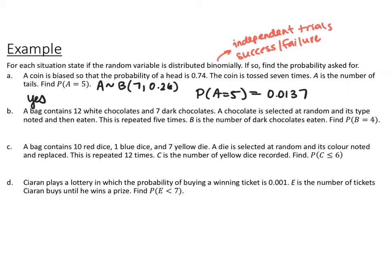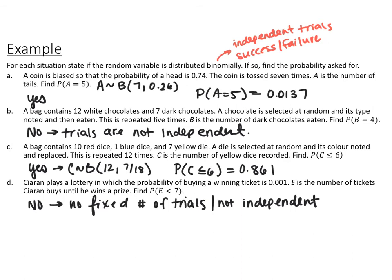For situation B: a bag contains 12 white chocolates and 7 dark chocolates. You select one at random, look at it, eat it, and repeat five times. This is not a binomial distribution because the trials aren't independent — since you're eating the chocolate, it changes the probability of the next trial.